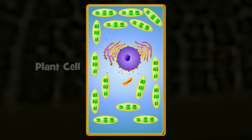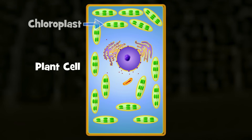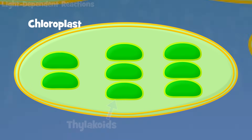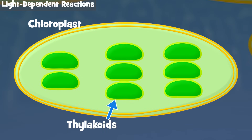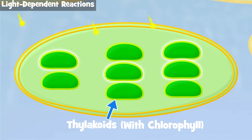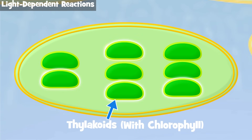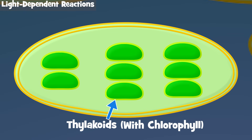Leaves are made of plant cells, and inside of these cells are special organelles called chloroplasts that do photosynthesis. Each chloroplast has many disks called thylakoids, with pigments like chlorophyll that absorb light. Think of thylakoids as solar panels in the chloroplast — they absorb the light energy from the sun.